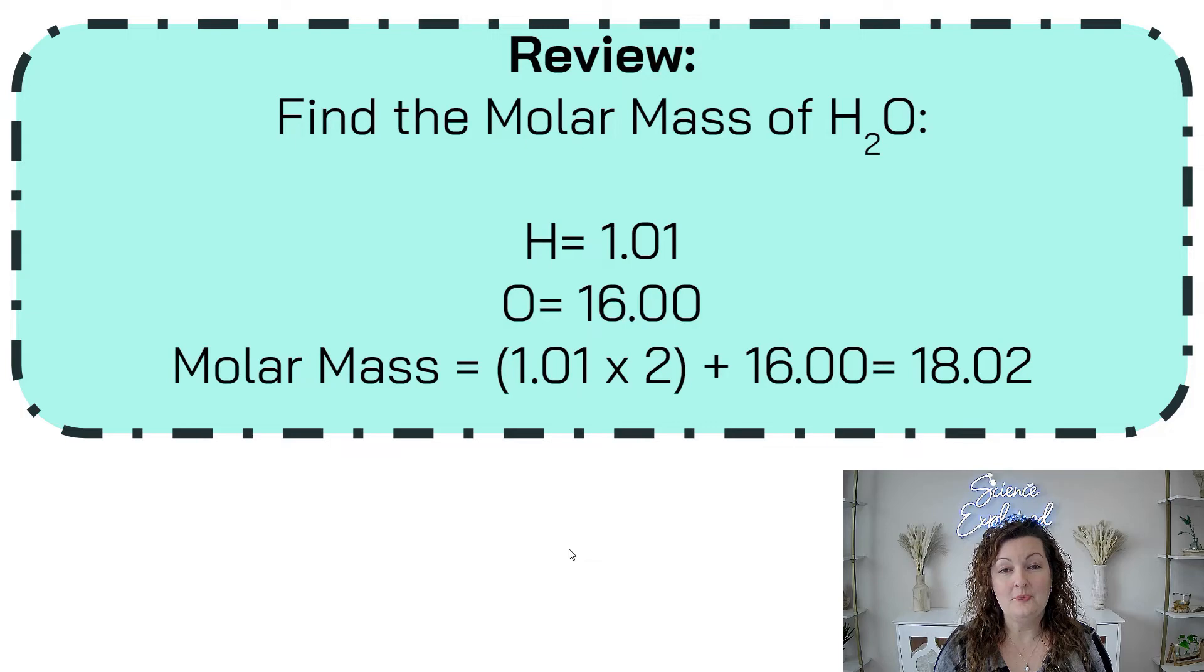Okay, so molar mass. Just a quick review on how to do molar mass. You're going to look up on the periodic table each one of the elements that make up your compound. So if we're doing H2O, I would look up hydrogen on the periodic table. It is 1.01. I would look up oxygen. It is 16.